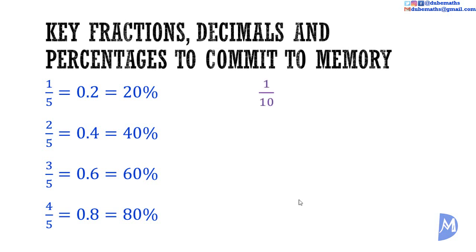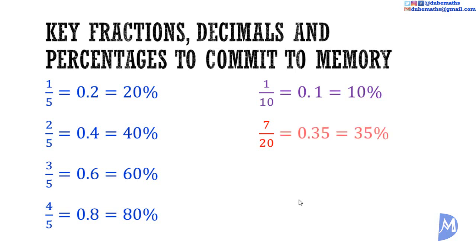One tenth is 10 over 100, thus 0.1 and 10%. For seven over 20: 20 multiplied by 5 is equal to 100, and 7 multiplied by 5 is equal to 35, giving 35 over 100, which is 0.35 or 35%. For 16 over 25: 25 multiplied by 4 is equal to 100, and 16 multiplied by 4 is equal to 64, giving 0.64 or 64%.